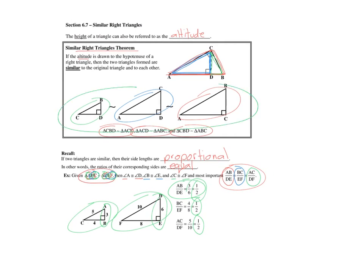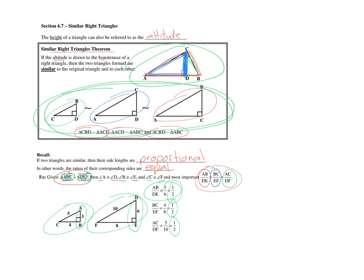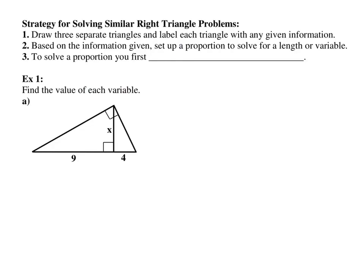We're really focusing on this idea for this lesson: taking a triangle, drawing the altitude, and breaking it up into three similar triangles. The strategy for solving similar right triangle problems is to draw three separate triangles and label each with any given information. I'm going to draw the small one — that's the blue — the medium one — that's the green — and the big one — that's the red.